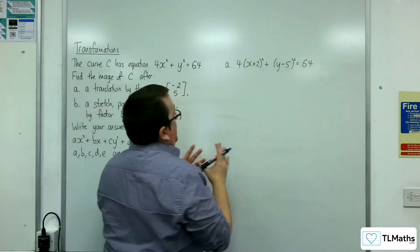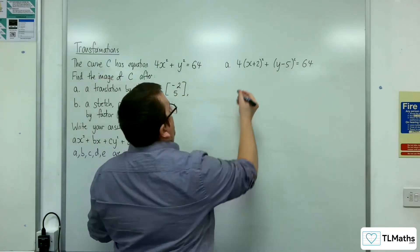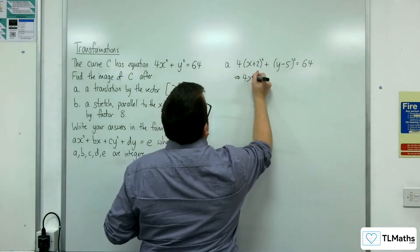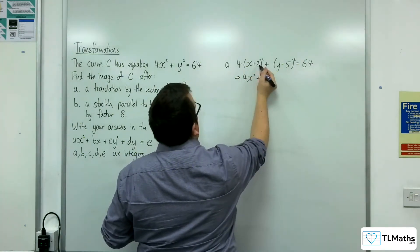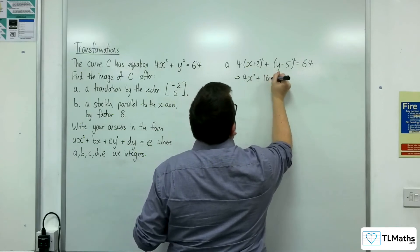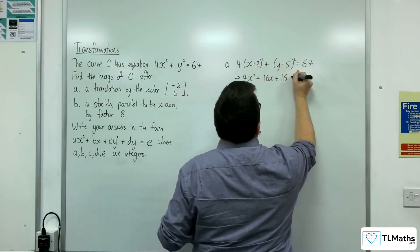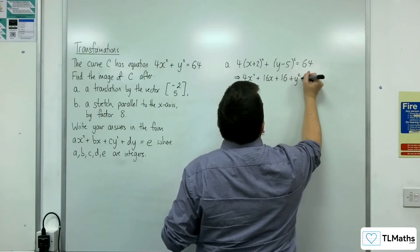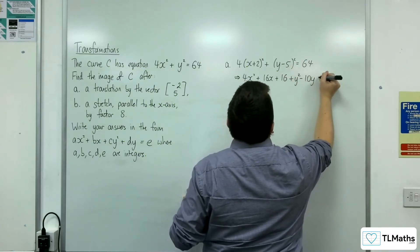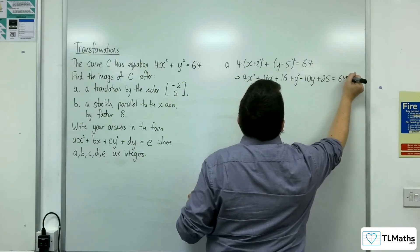So we just need to expand this out then. So we're going to get 4x squared plus, now there'll be 4x times 4, so 16x, and then we're going to get 4 times 4, so 16, plus y squared take away 10y plus 25 is equal to 64.